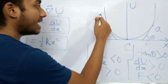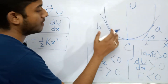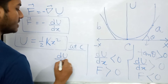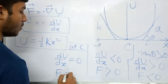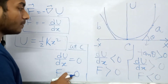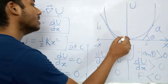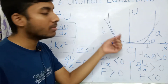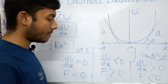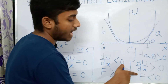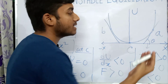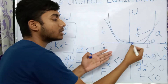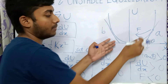For point C, since this is the minimum of the curve, dU/dx at C is zero. Therefore, the force acting on a particle at point C is zero — the particle will experience no force and will be at rest at point C. If a particle is at point A, the force is negative, meaning it is directed along the negative x-axis, that is toward the origin of the parabola, toward C.